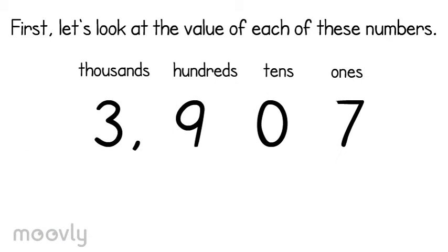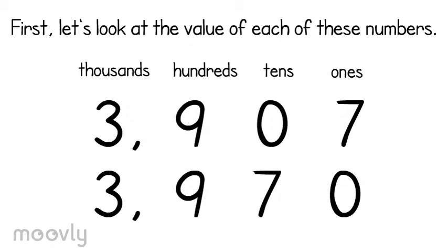Our first number has 3 thousands, 9 hundreds, 0 tens, and 7 ones. Our second number has 3 thousands, 9 hundreds, 7 tens, and 0 ones.